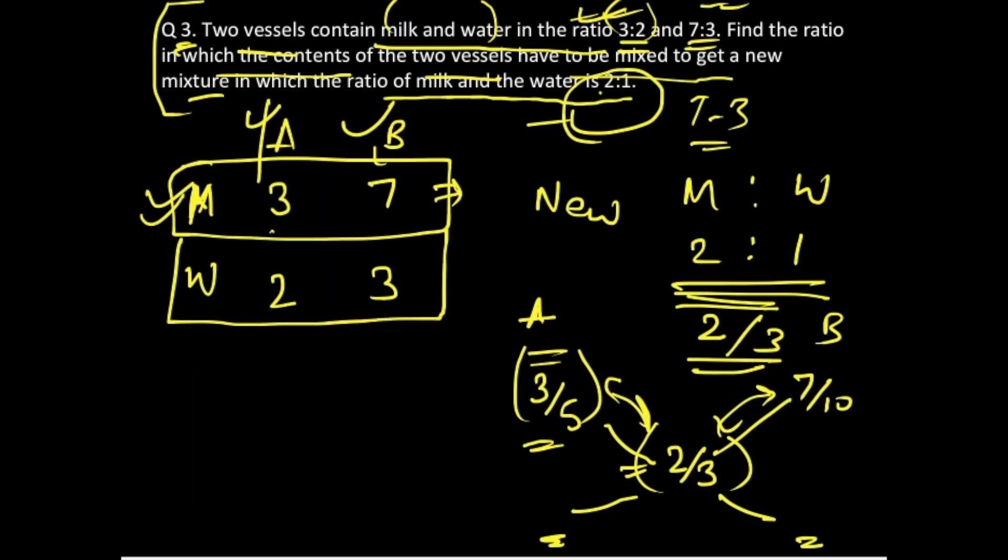In order to subtract 2/3 from 7/10, we'll take the LCM of 3 and 10, which is 30. 3 times 7 is 21, and 3 times 10 is 30. If you multiply 2 by 10, you get 20 over 30.